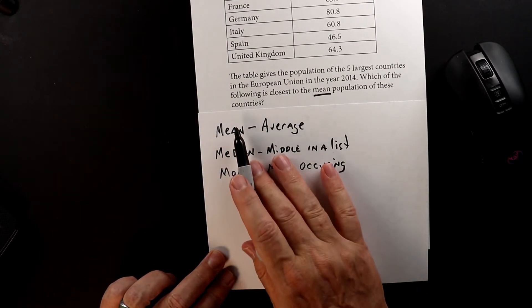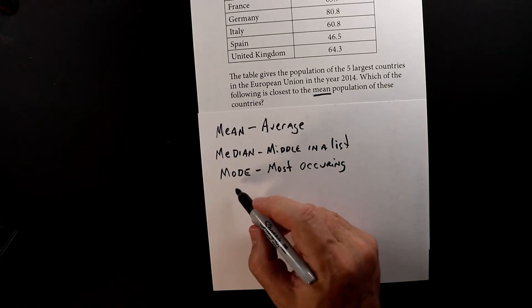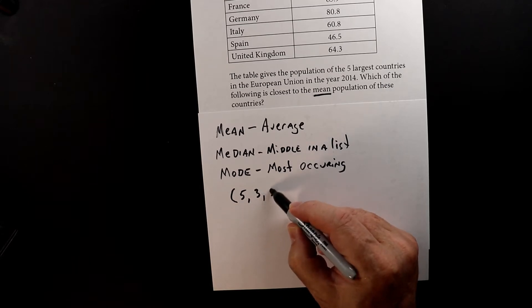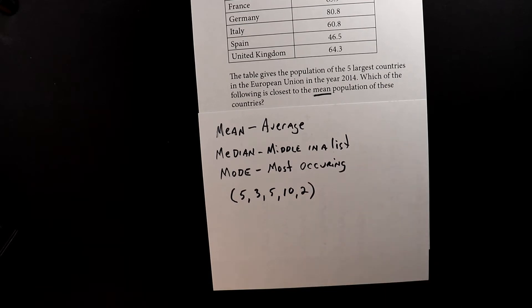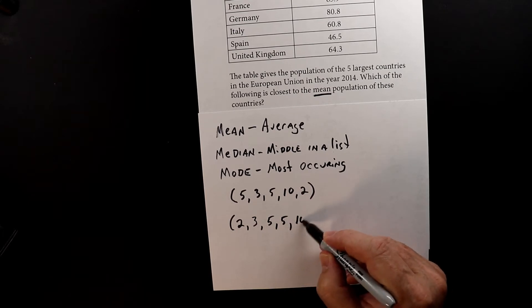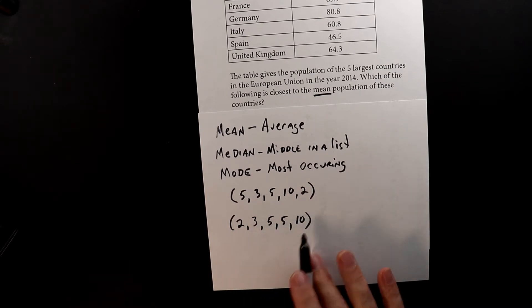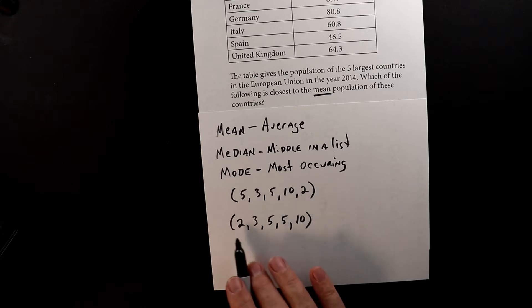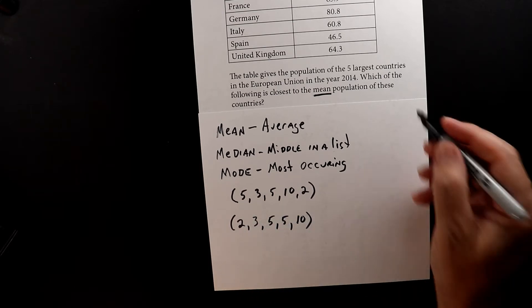Let me give you an example of mean, median, and mode. Let's say you had a set of numbers where you had five, three, five, ten, and two. So we have five numbers there. The first thing we want to do is put them in order from smallest to biggest. So the first number is going to be two, then three, then we have two fives, and then the largest and last is ten.